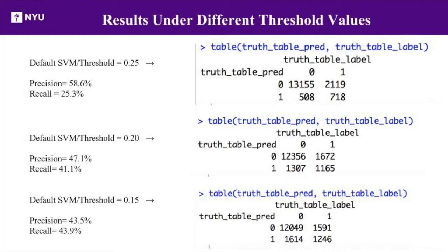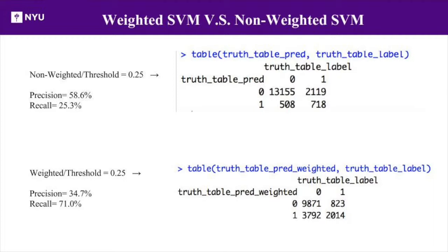We tried different threshold values for the prediction process. The precision for the threshold value at 0.25 is much higher than the other cases. However, as a trade-off, the recall for the 0.25 case is relatively lower than the other cases. We also tried weighted SVM, where we assigned different weights to different genres based on their proportions in the training dataset. The precision for the non-weighted SVM is much higher than weighted SVM, while the recall of weighted SVM is much higher — so there is a trade-off between the weighted and non-weighted SVM.